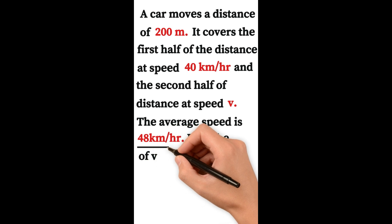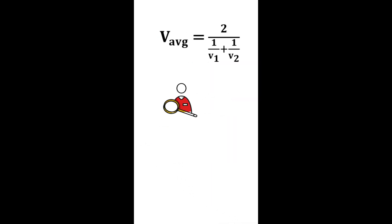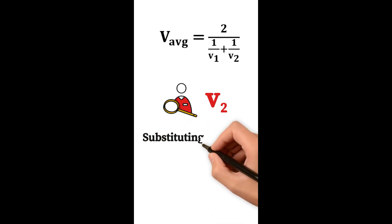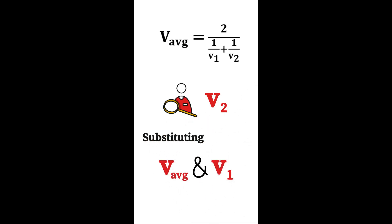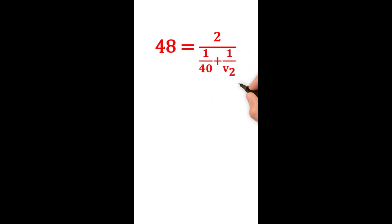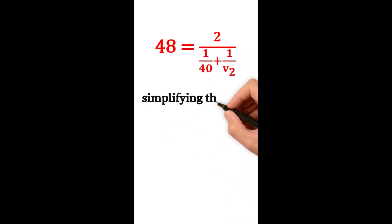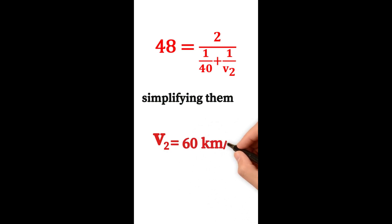The average speed is 48 km/h and v1 is 40 km/h; we need to find v2. Substituting: 48 = 2 / (1/40 + 1/v2). Simplifying, we get v2 = 60 km/h.